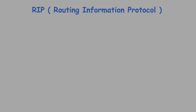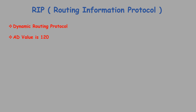RIP stands for Routing Information Protocol. RIP is a dynamic routing protocol and a distance vector routing protocol which has an AD value of 120. AD means administrative distance, or the trustworthiness of the protocol.